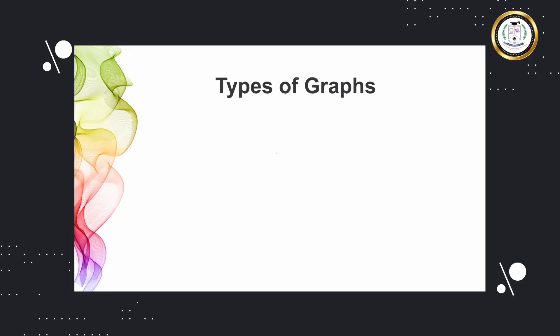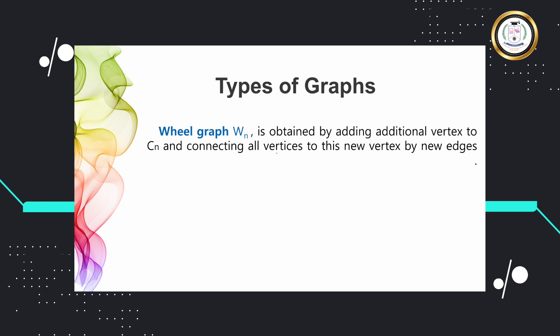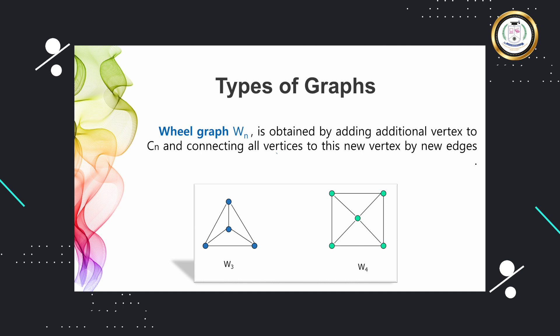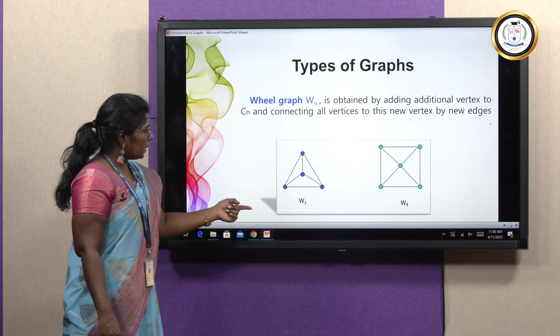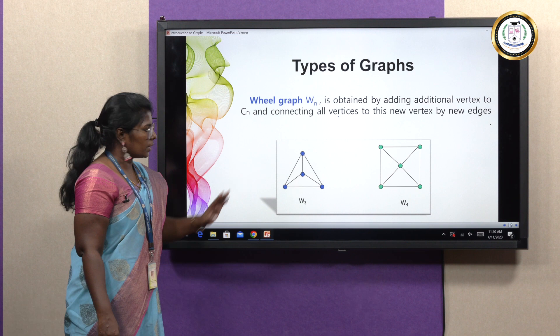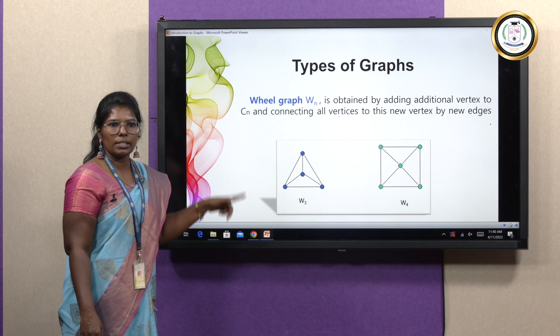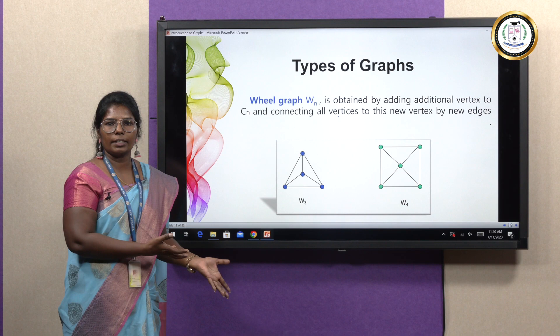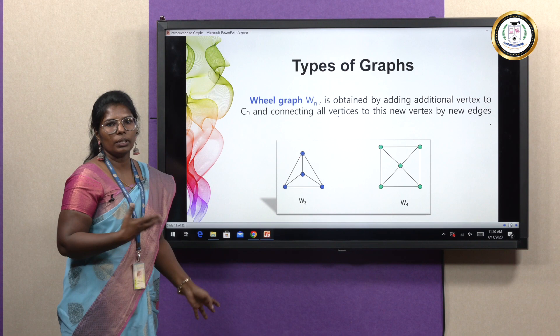In a cycle graph, if we add a certain vertex connecting all other vertices to that additional vertex, we get a wheel graph Wn. Here we have cycle C3 and an additional vertex is introduced in the middle, and all three other vertices are connected to the middle vertex — this is a wheel graph on three vertices. Similarly, a wheel graph on four vertices W4 is constructed by introducing a vertex in the middle and joining all four other vertices to it.